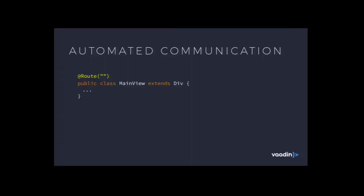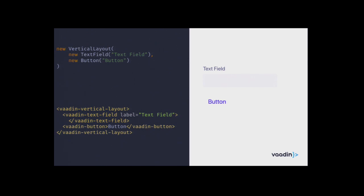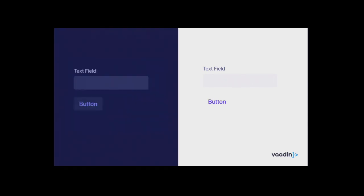A quick recap of other features: automated communication - you can use WebSockets and remember to use the access() method. You can also mix declarative and imperative styles - a lot of times your designer gives you an HTML template for the main layout and you plug in where the view goes, generating forms in Java inside that. Vaadin has support for theming - let's take a look at a more real-life example.